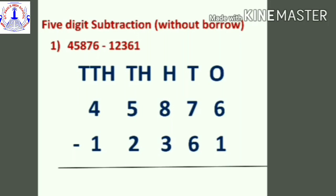Starting from the ones place — can you see, students, which digit? Six and one. So you're going to subtract one from six. One is the smaller number, so you can subtract it. Six minus one becomes five.